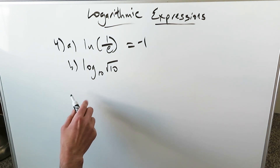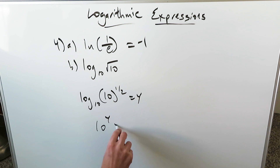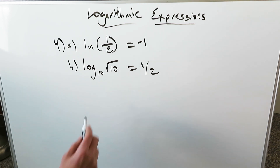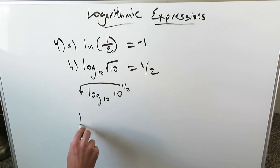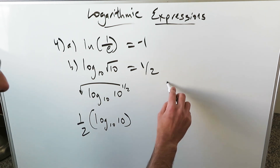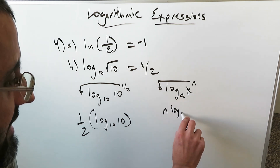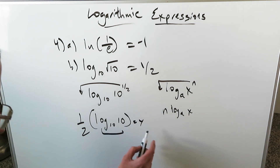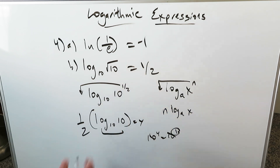The next one is not too bad. Log base 10 of 10 to the power of 1/2 equals Y. So 10 to the Y equals 10 to the 1/2, therefore Y equals 1/2. You can also do it a longer way: log base 10 of 10 to the power of 1/2 — transport the exponent to make it a coefficient: 1/2 times log base 10 of 10. This is the property log base A of X to the N equals N times log base A of X. Log base 10 of 10 equals 1, so 1/2 times 1 gives you 1/2, and you're done.